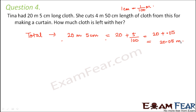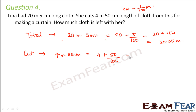Now, how much did she cut? She cut 4 meters 50 centimeters. That is equal to 4 plus 50 divided by 100, which is 4 plus 0.50, equal to 4.5 meters. So she had 20.05 meters in total and cut 4.5 meters from it.